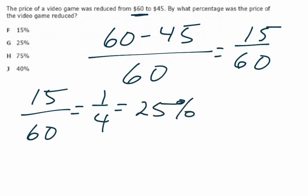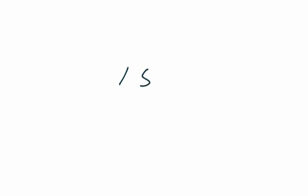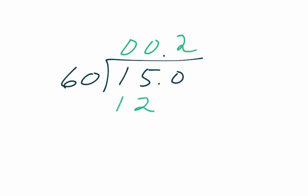If you didn't have that, you could have taken 15, 15.0, divided by 60, and you'll get the same answer. 60 does not go into 1. It does not go into 15. But you would get 30. And then when you bring this down, 300, 60 goes into 300 evenly five times. It's 300.